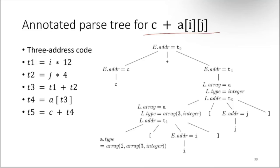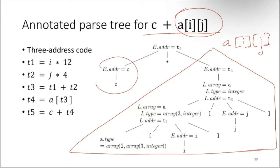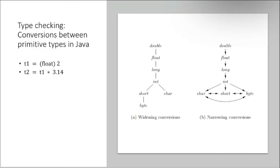For the expression c + a[i][j], the parse tree shows this part for array reference a[i][j] and this part for c. I won't go into all these complex details right now.